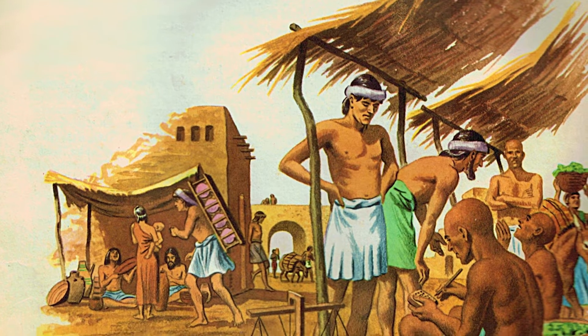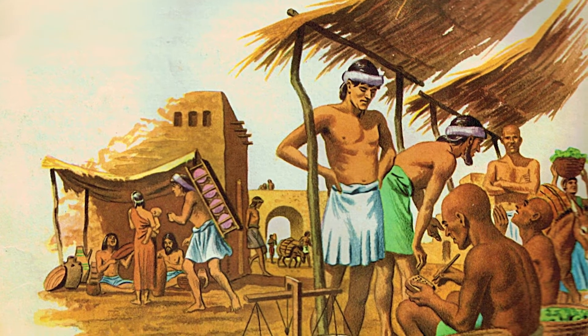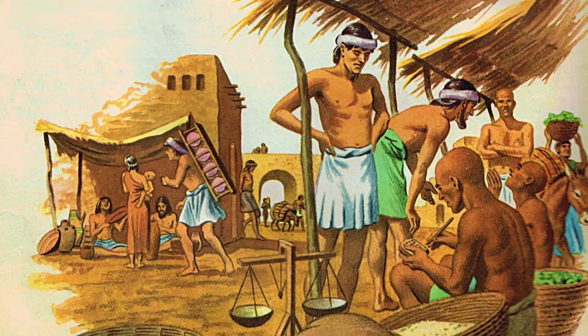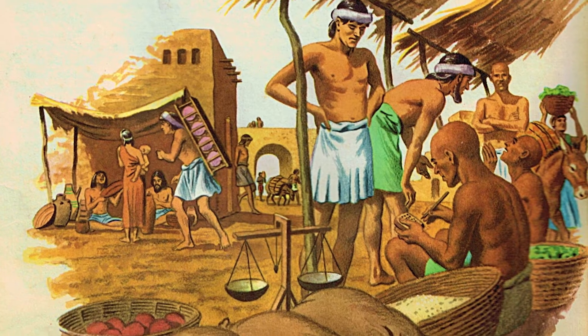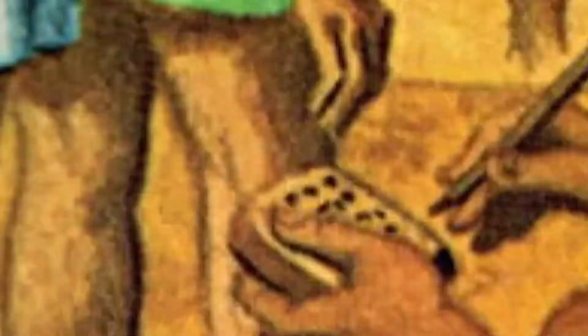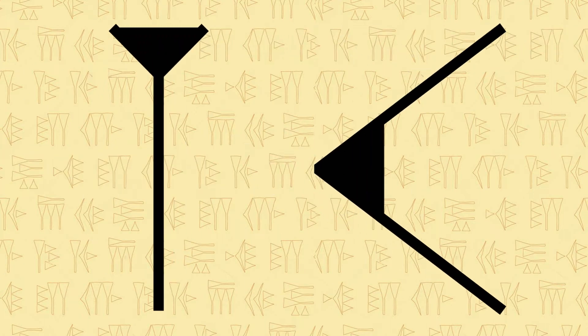Scribes wrote these notations on damp clay using a dried reed, a system called cuneiform, meaning wedge-shaped. At the basis of the sexagesimal system were two symbols. The first was a vertical wedge, meaning the number 1, and the other was a corner wedge, meaning 10.